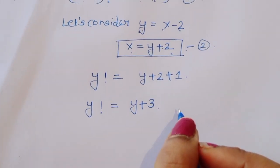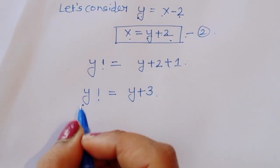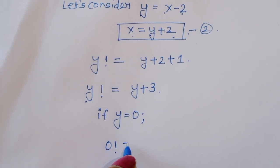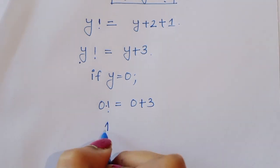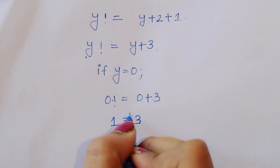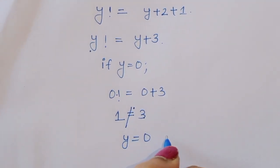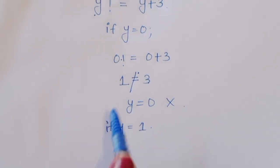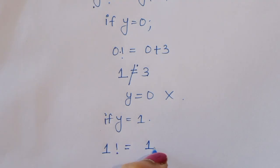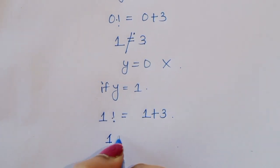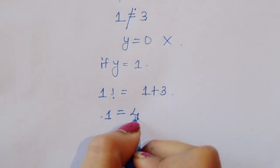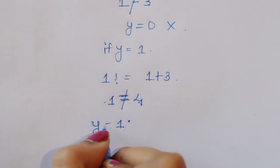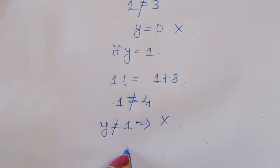Now we test values of y. If y equals 0: factorial of 0 equals 0 plus 3, meaning 1 equals 3 — not possible, rejected. If y equals 1: factorial of 1 equals 1 plus 3 equals 4, meaning 1 equals 4 — not possible, rejected. If y equals 2: factorial of 2 equals 2 plus 3 equals 5, meaning 2 equals 5 — rejected.